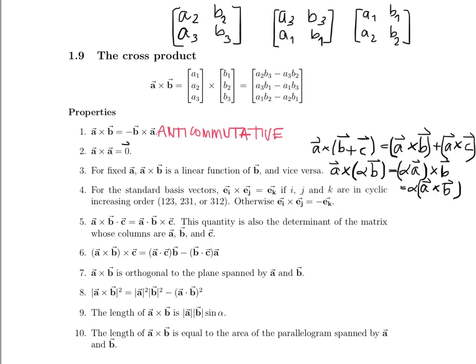Property 7: A cross B is orthogonal to the plane spanned by A and B. This is really important. Since two orthogonal vectors have a dot product of zero, A crossed with B and then dotted with A is zero, as is A crossed with B dotted with B. So if you ever have a scalar triple product where one of the vectors is repeated, you'll get zero, because the cross product is orthogonal to the plane that both A and B are in. We'll talk more about what spanning means later in the course.